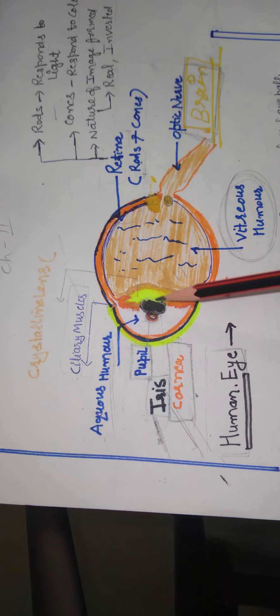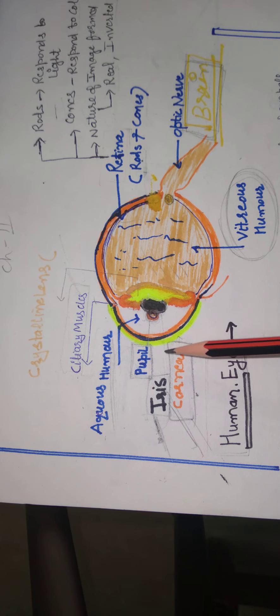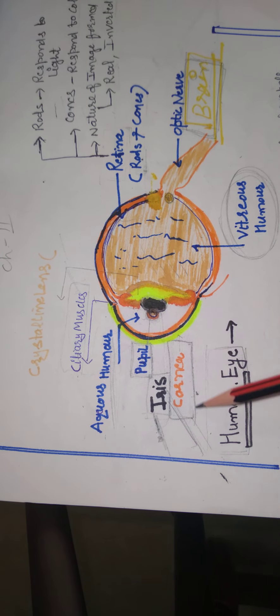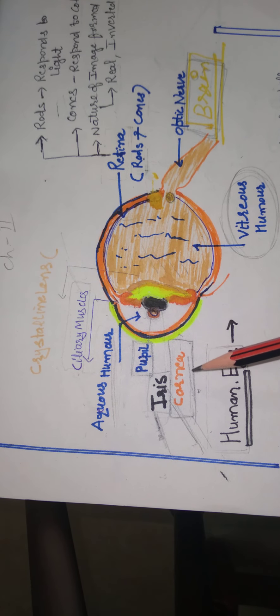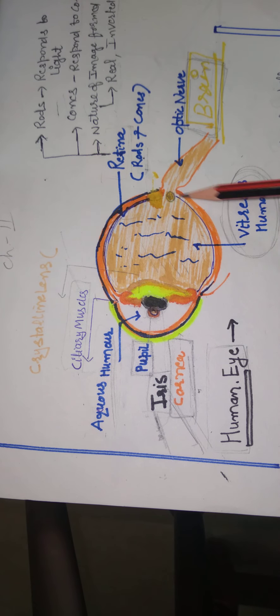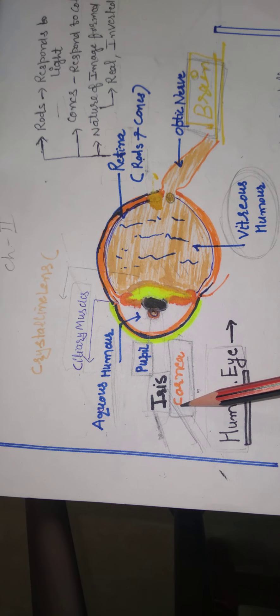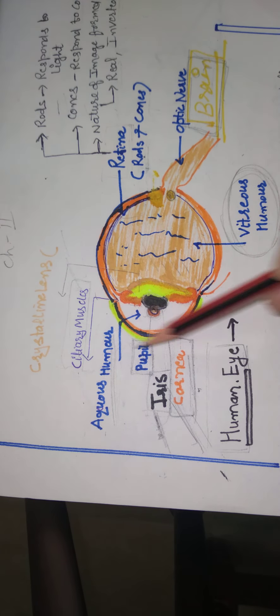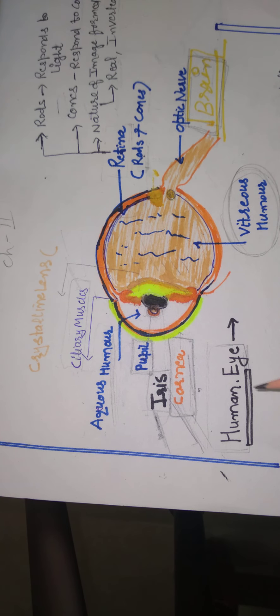We will discuss all parts one by one and its functions. First, cornea. Cornea is called the window of the eye. Image को retina के उपर देखने के लिए जितनी भी light enter होती है eye में, it is through the cornea. हम इसको आई का प्राइमरी लेंस कह सकते हैं and it is a thin transparent membrane covering the surface of eyeball.